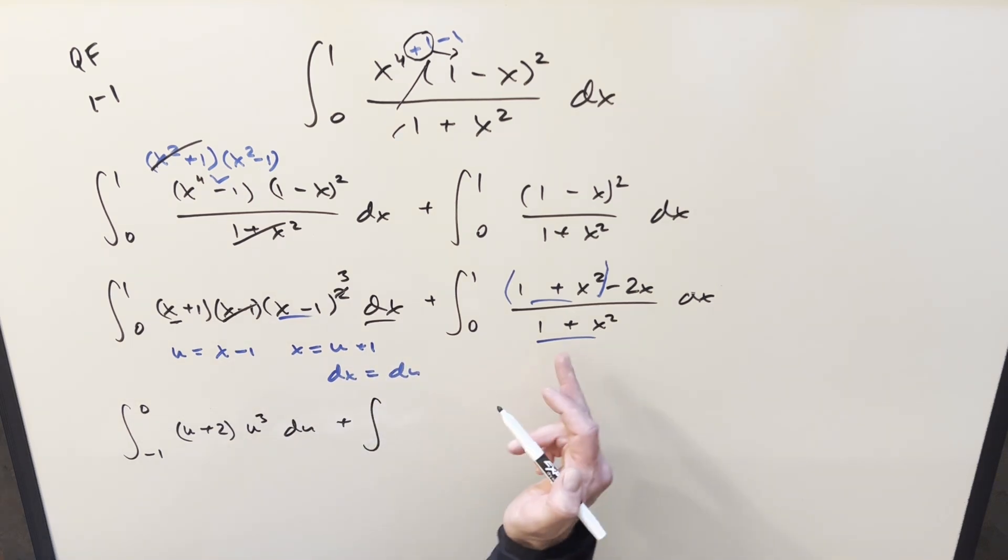Over here what's going to happen again we have that cancellation with one plus x squared over one plus x squared so this middle integral is just going to be one but we still have the minus two x so we have one more integral so now it's going to be zero to one two x over one plus x squared.